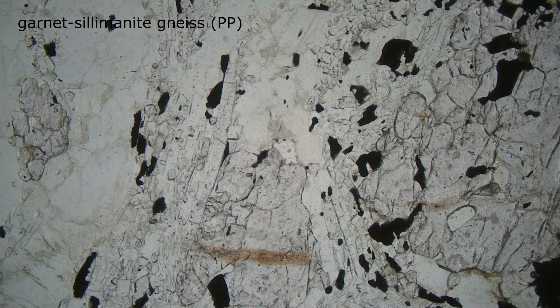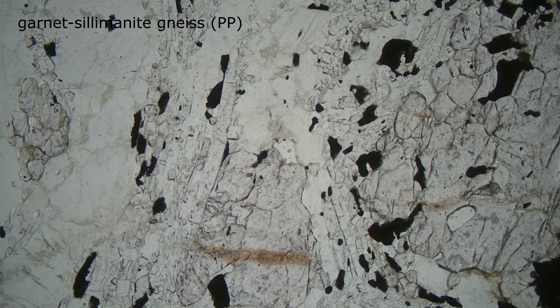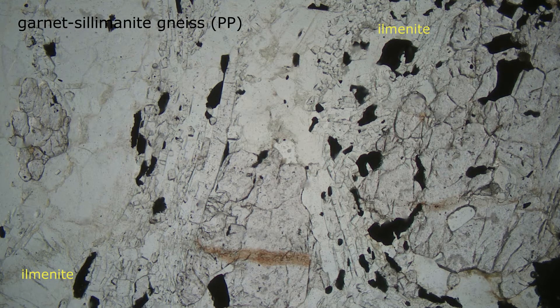Here we see a thin section view of a garnet-sillimanite gneiss in plain polarized light. The opaque grains showing in black are ilmenite. Ilmenite is one of the most common of the opaque minerals in thin section.